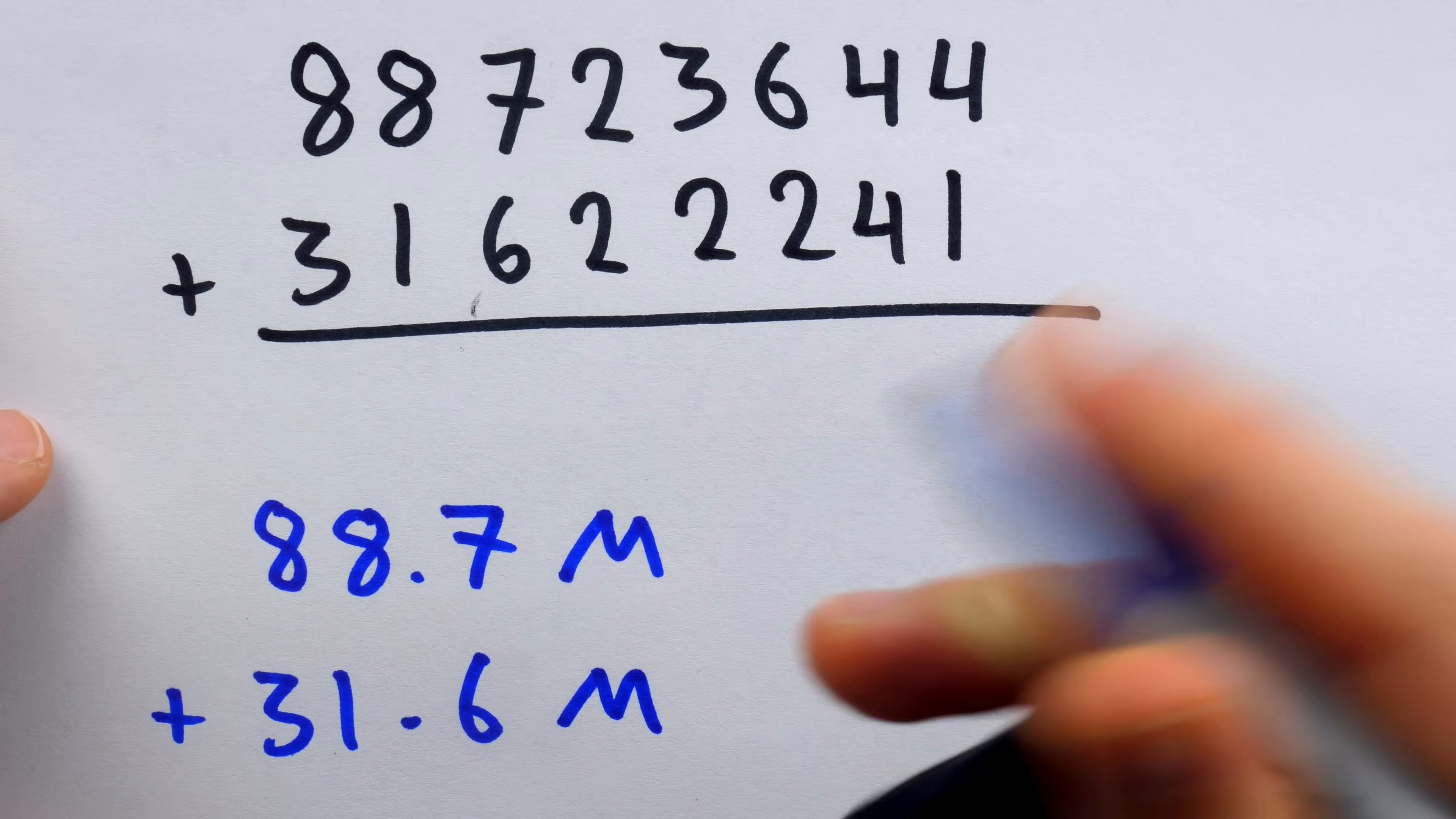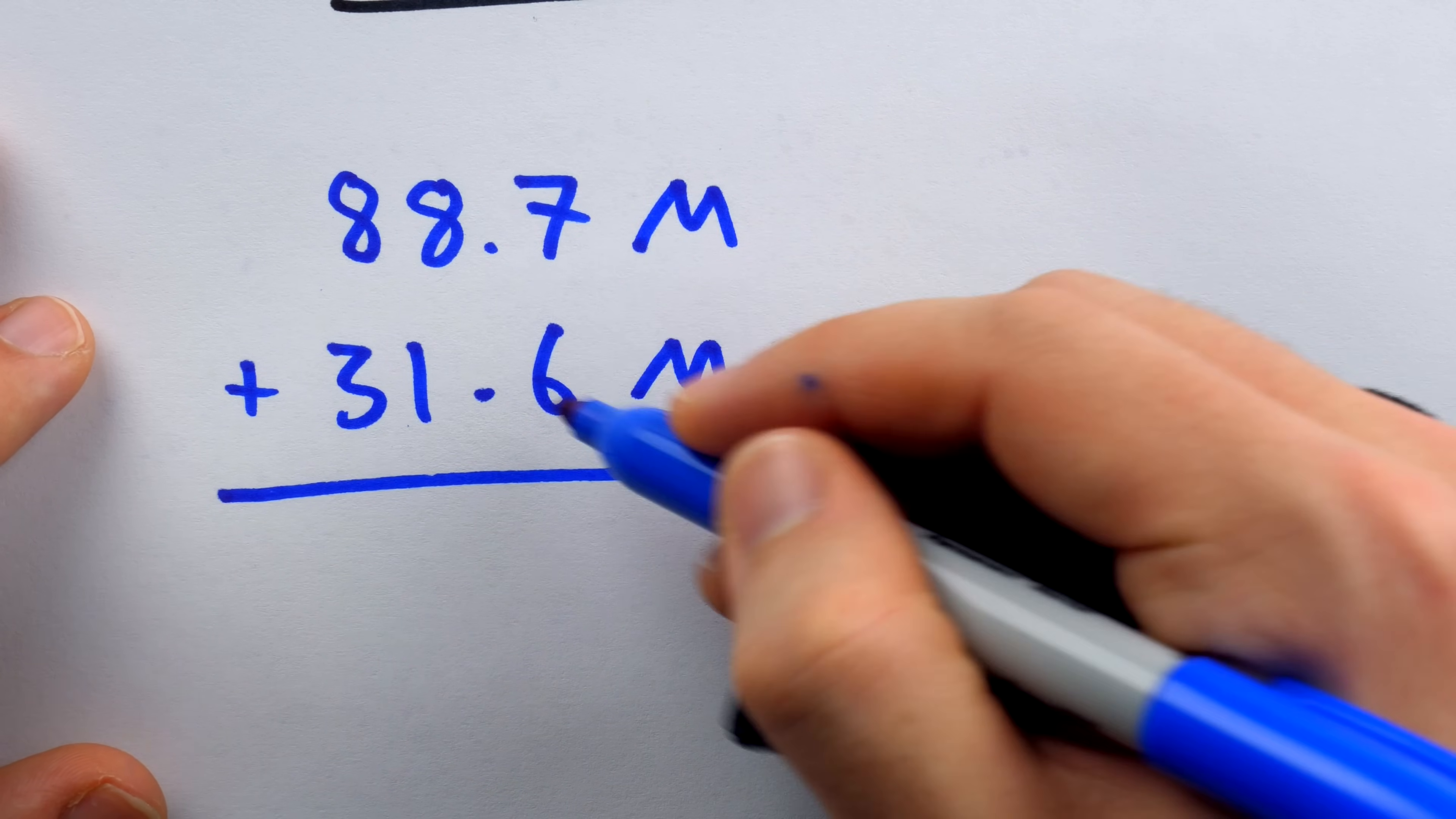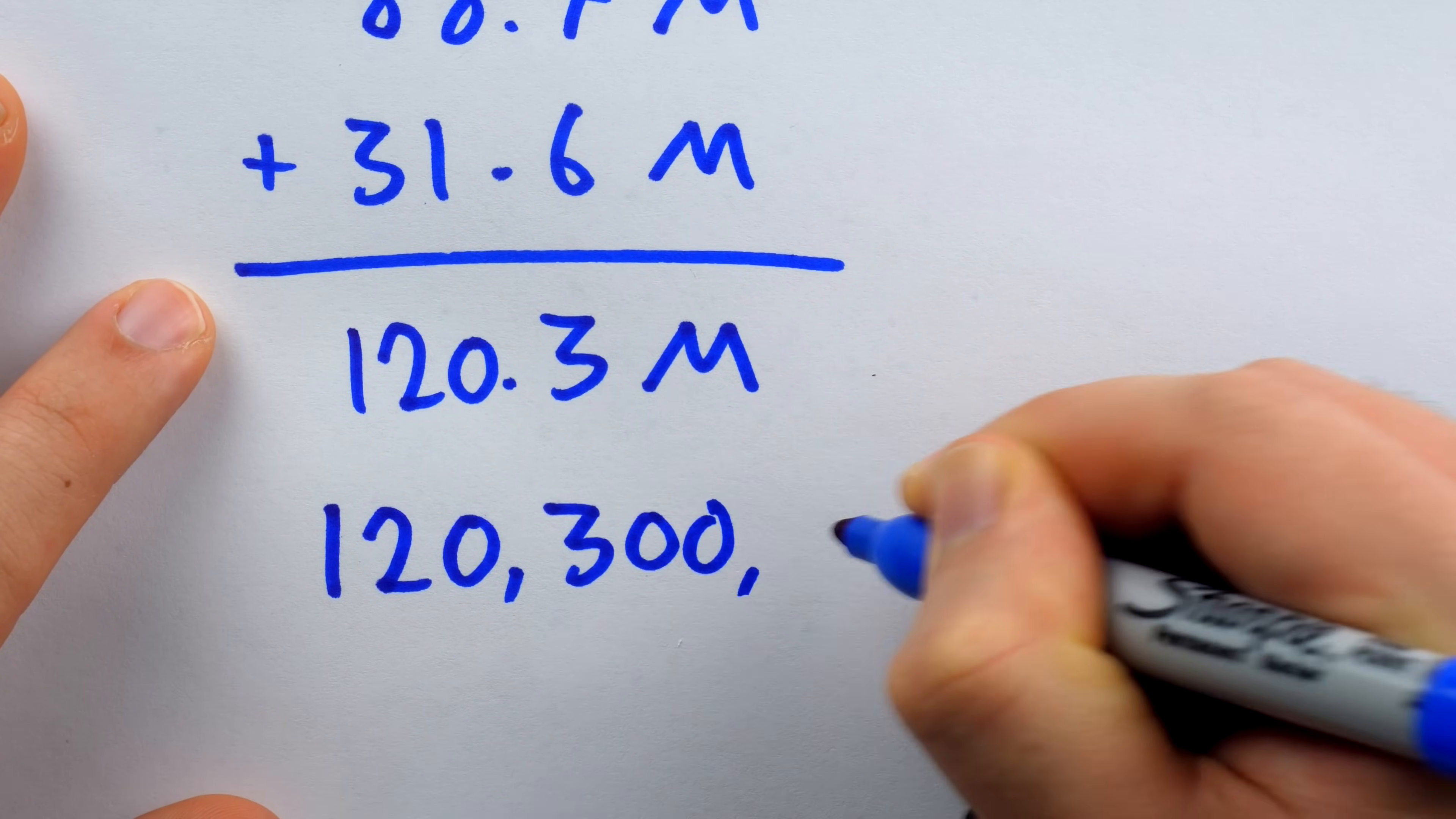I'm just using this notation with decimals to cut down on the number of zeros we have to write. And then this is pretty darn easy to do. 88 plus 30 is 118 plus one is 119. And then add these decimals up. It becomes 120.3. So 120.3 million or writing it traditionally 120 million 300,000. In this case, our easy estimate is off by less than 50,000.